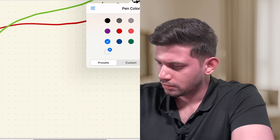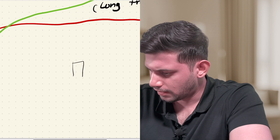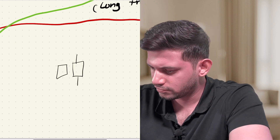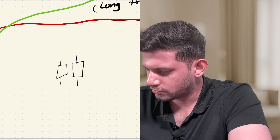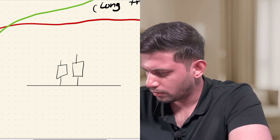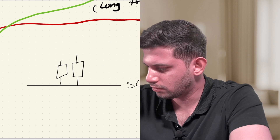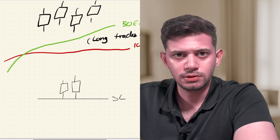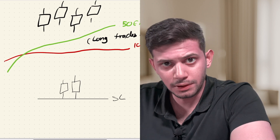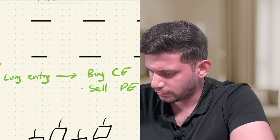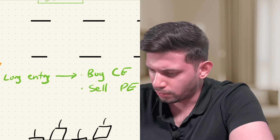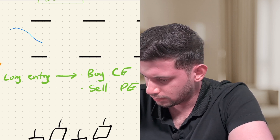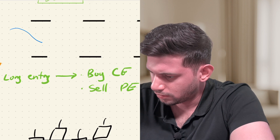For stop losses on the long trade, there are two conditions. The first: let's say this is the entry candle and the candle before it is the previous candle — the stop loss will be the low of that previous candle. The second stop loss condition is when the blue line in the stochastic crosses below the orange line.